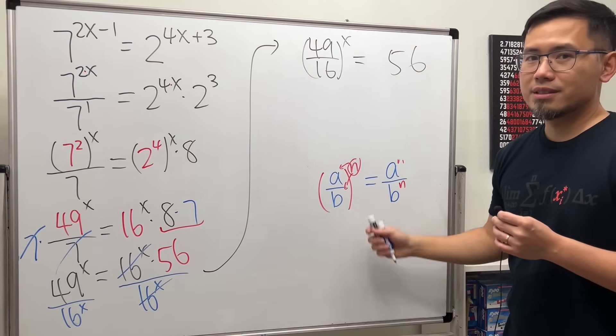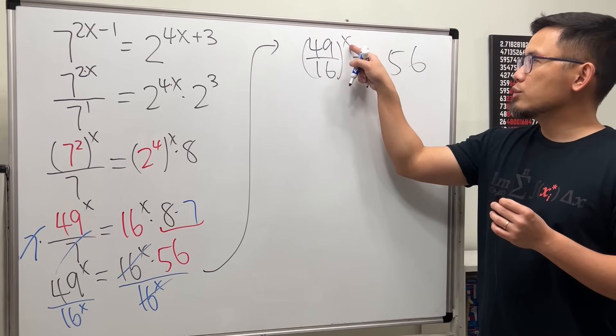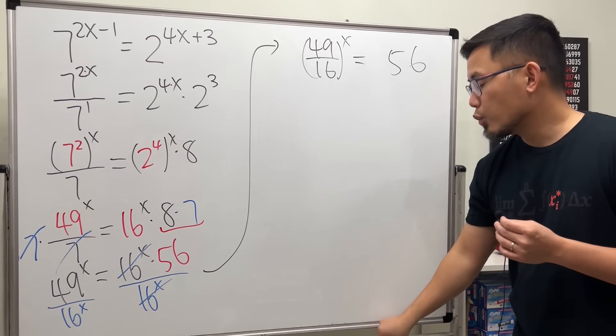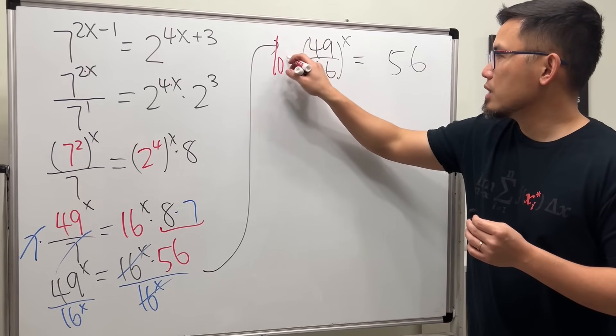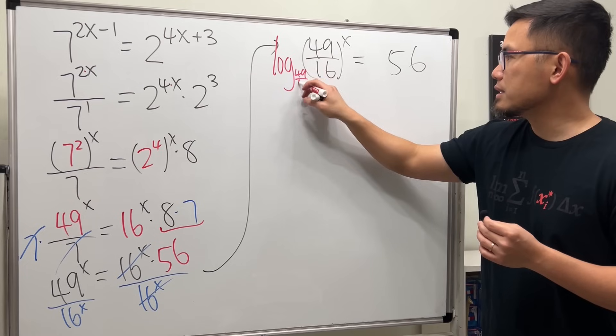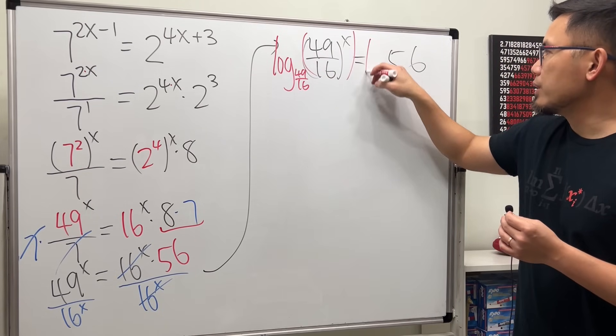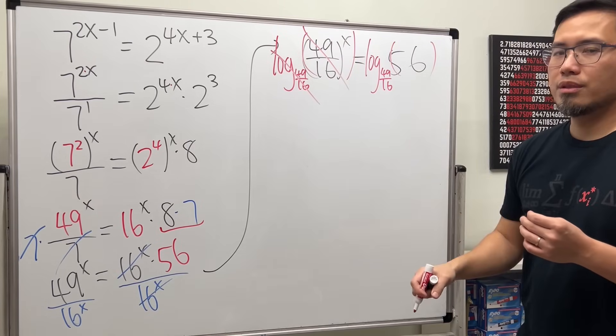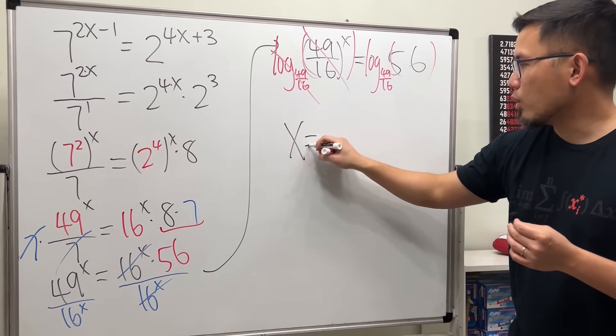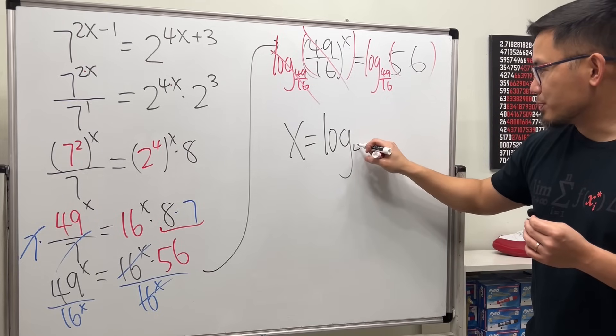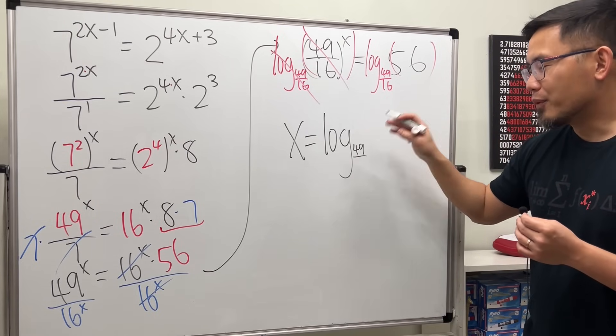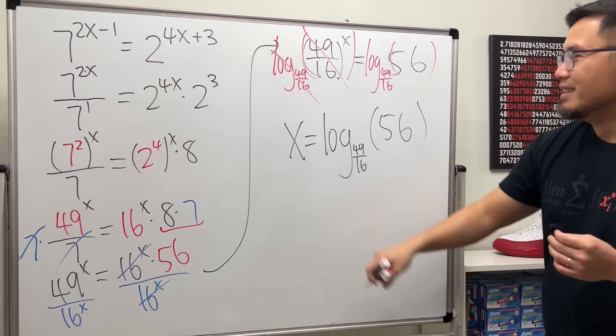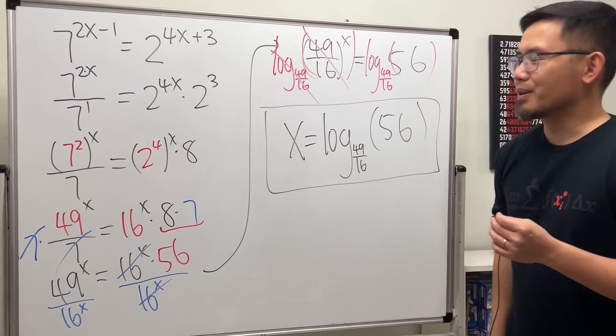Again, apply this backwards. So now, we have a number raised to the x power equals a positive number. So per our discussion in the previous video, we can just go ahead and take log with the same base, which is 49 over 16. Go ahead and do that on both sides. So that this and that cancel. And then we just have x equals log. The base is pretty crazy, right? 49 over 16, and then the input is 56. But I do think that this is a cleaner look for the answer.